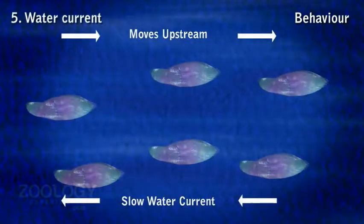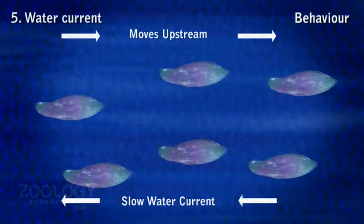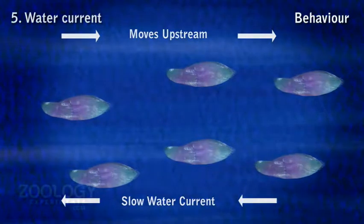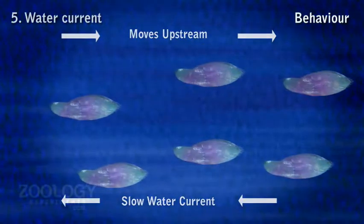Response number five is to water current, called rheotaxis. Paramecia show a positive response, orienting themselves with their anterior ends upstream and swimming against the current.